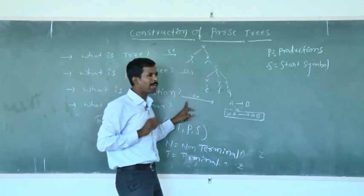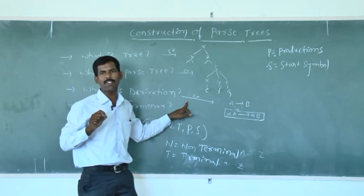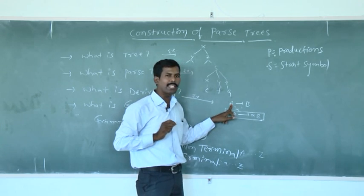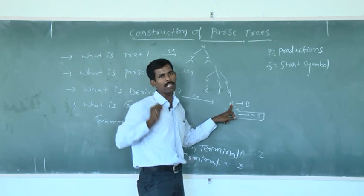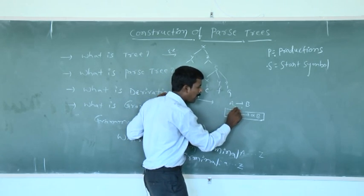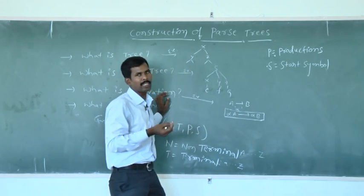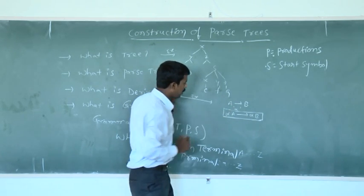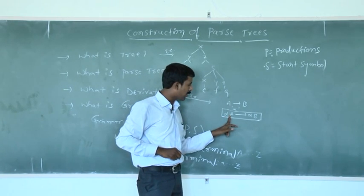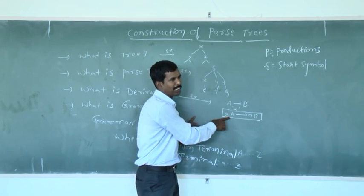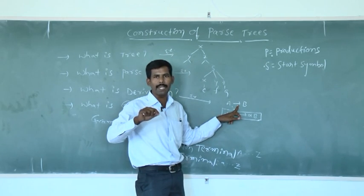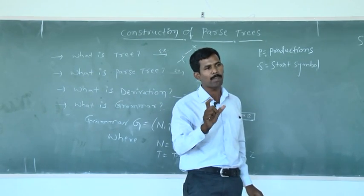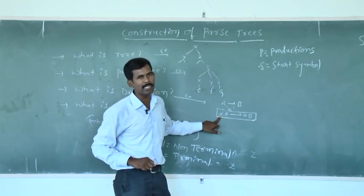What is meant by a derivation? The derivation is a sequence of applications of productions of the grammar. For example, take A produces b — that is a production. Whenever we add alpha as an extra node on both sides of A and b, this is converted into alpha A produces alpha b. This is called a derivation. The first — A to b — is the production; whenever we add something on both sides of the production, we get the derivation.